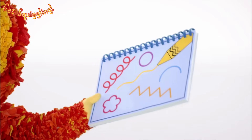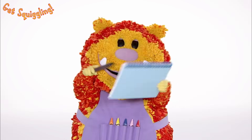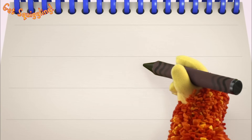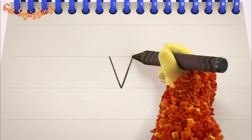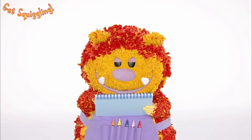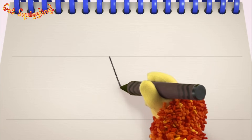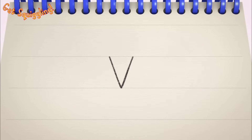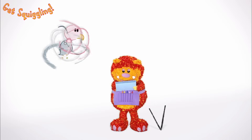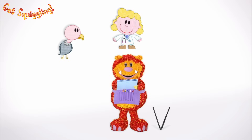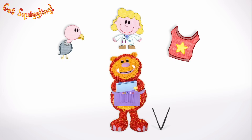Have you got your squiggle pads and squiggle sticks ready? Let's get squiggling! Holding your squiggle stick like this, move it down and up — the letter V! Let's squiggle it again: go down and up — the letter V! Shall we squiggle some things that start with the letter V? A vulture, a vet and a vest — they all begin with the letter V!